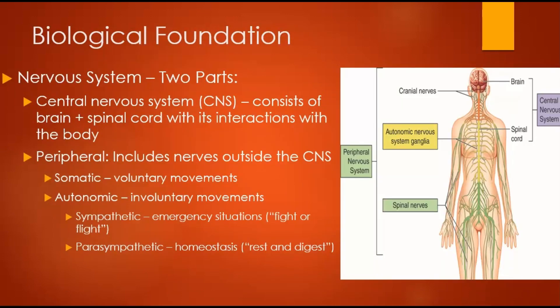It's really important to know the biological foundation here, in particular the nervous system. The two main parts are the central nervous system, the CNS, consisting of the brain and spinal cord, and then the peripheral nervous system, including all nerves outside the CNS. Under the peripheral we have the somatic, which deals with voluntary movements.